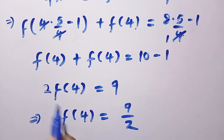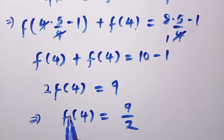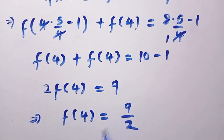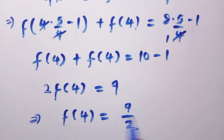And we are going to have f of 4 equals 9 divided by 2, when we divide both sides by 2. So the value of f of 4 is 9 over 2. This same f of 4 will be used in the next part of the solution.